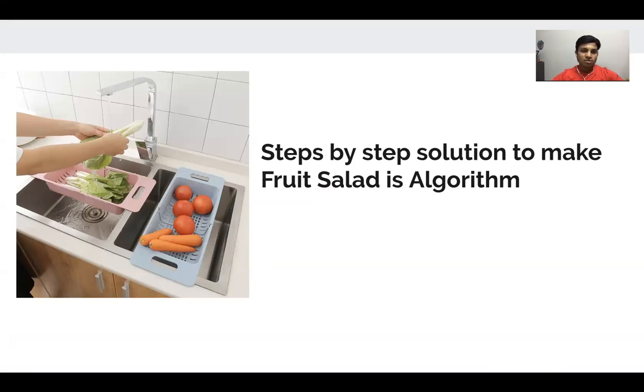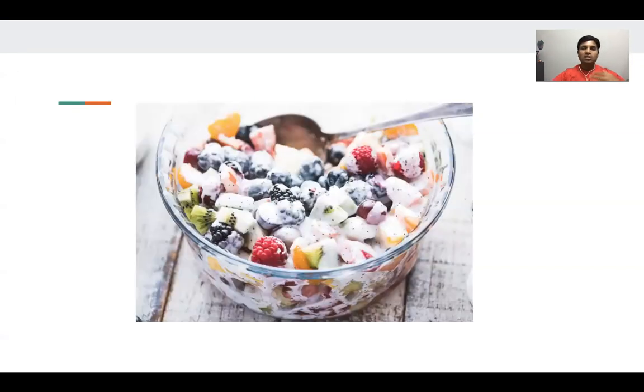First you would wash your vegetables, then you would chop them. After chopping, you would apply some dressing, some creams. You might freeze them, decorate them, and then you would present it. All these steps which are involved on data to perform certain steps to get certain output, that is called algorithm. The problem solving steps on the data, for example the fruit - you chopped it, did everything, and you got the solution.